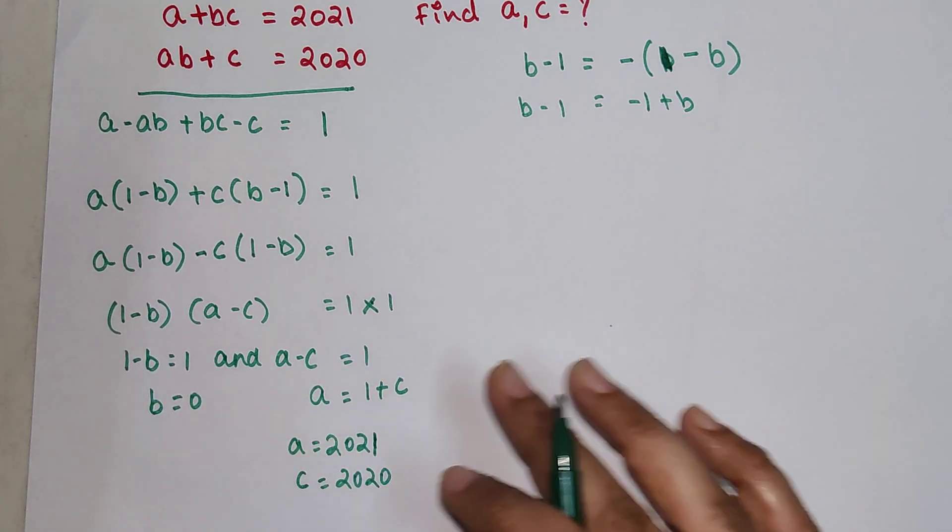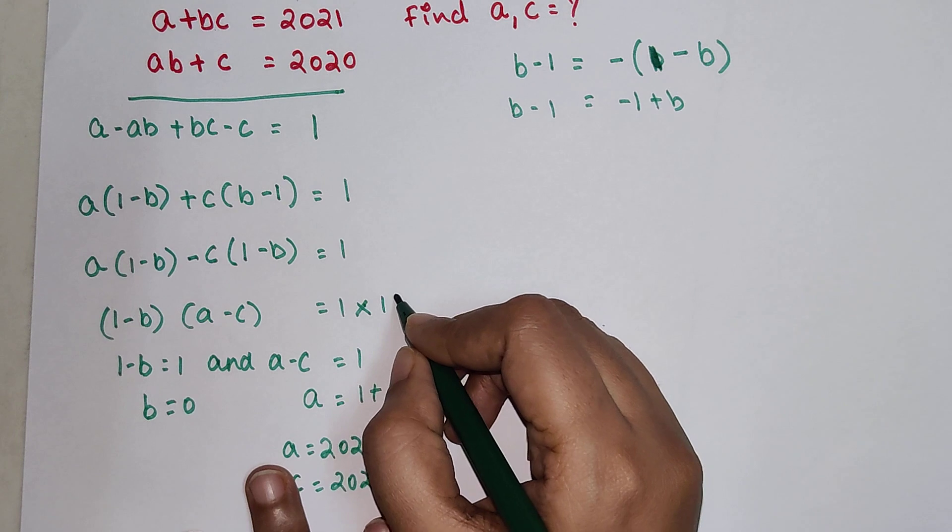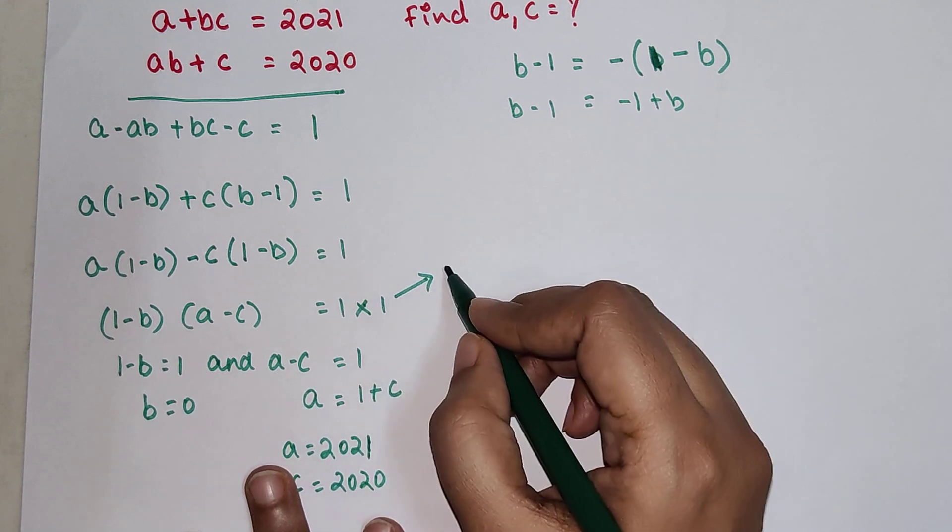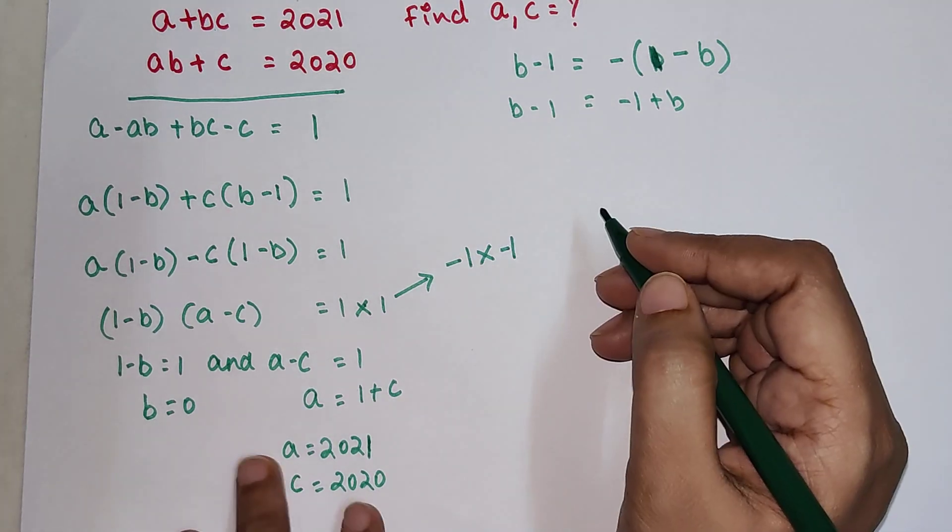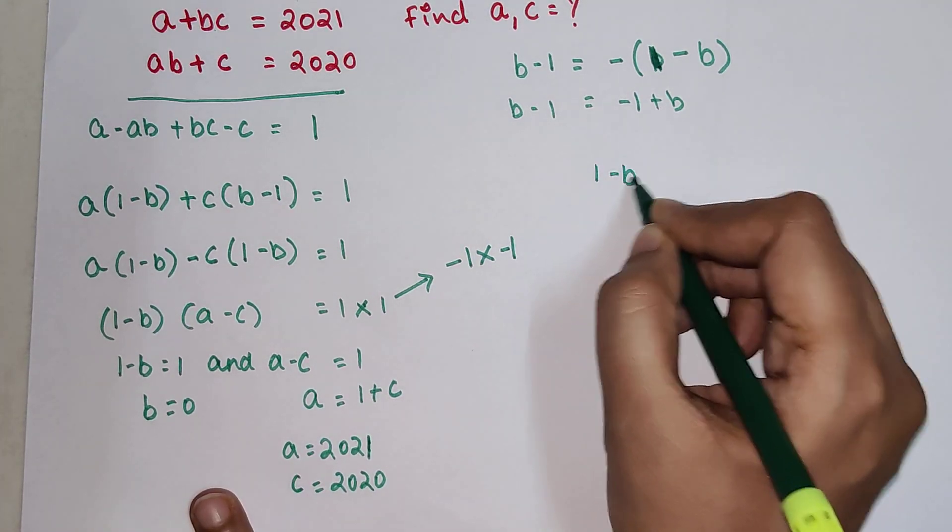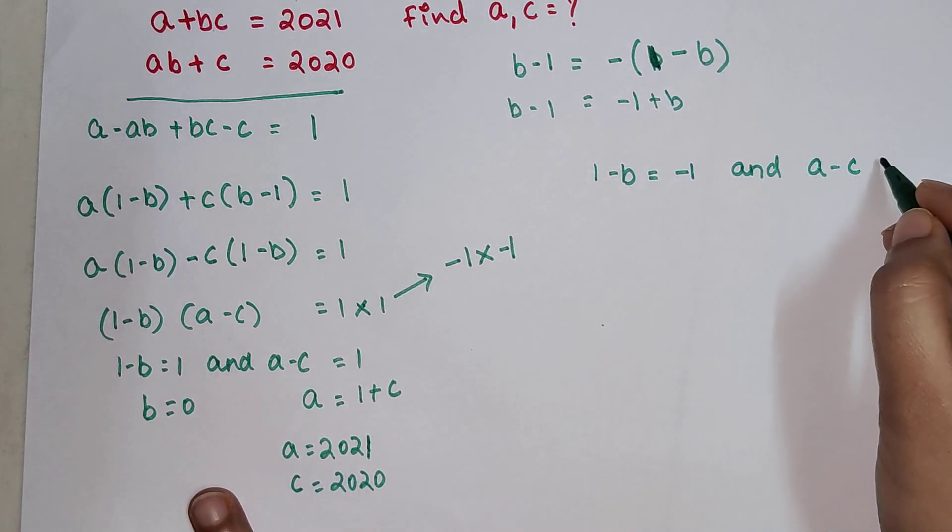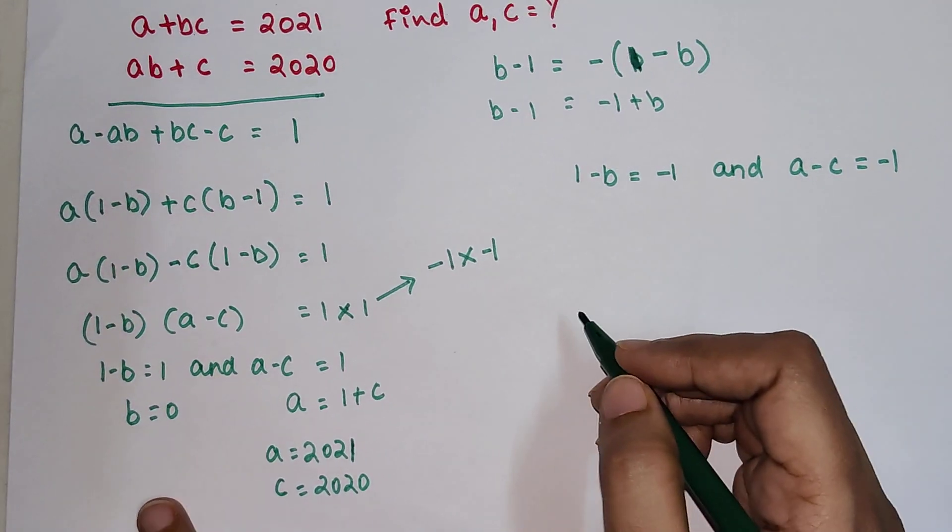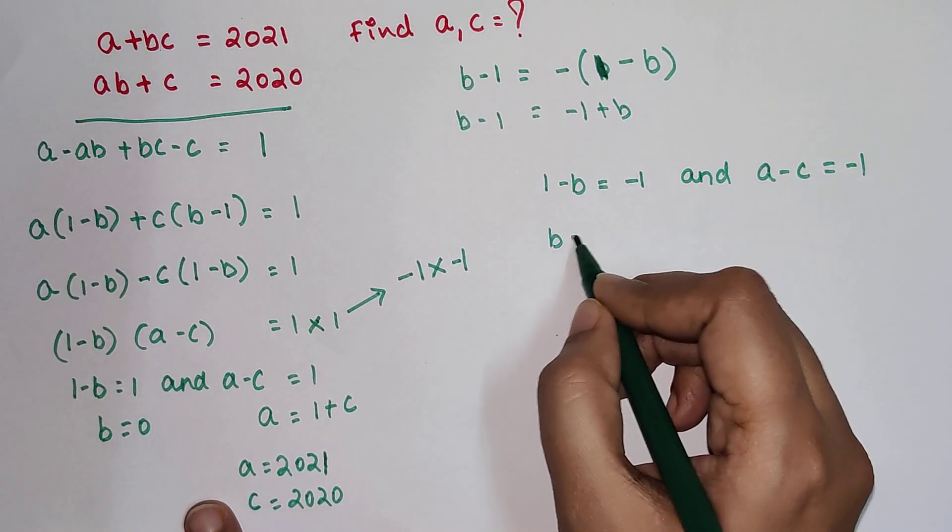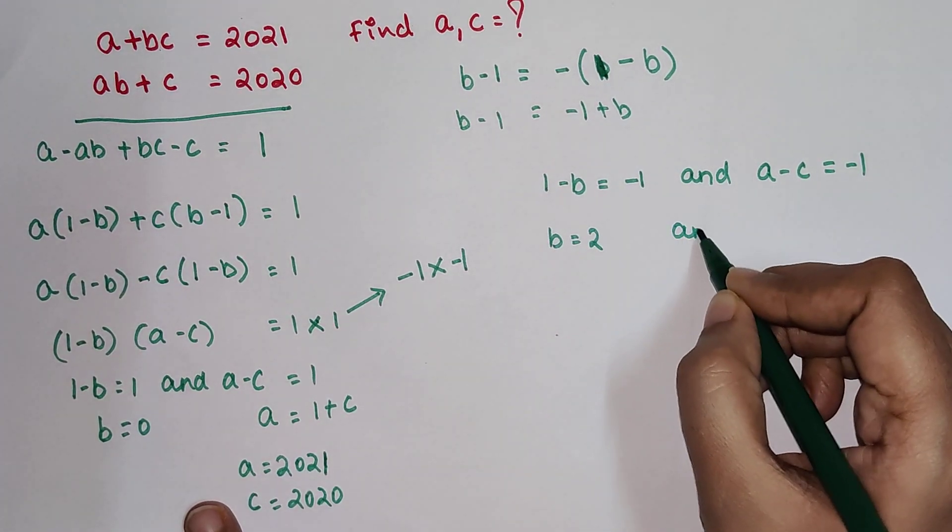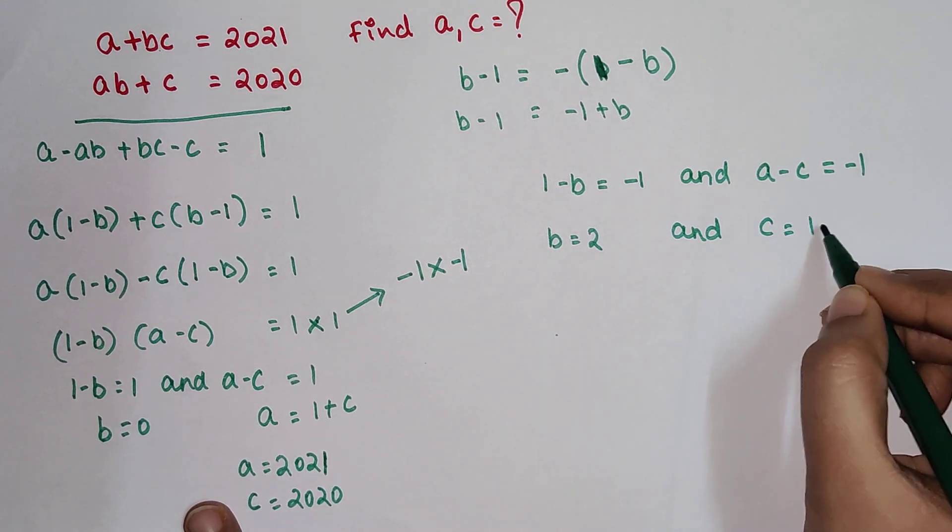Now students most of the students got this answer right? But there is one more scenario where you can get 1. That is nothing but minus 1 into minus 1 and in that scenario I can say that 1 minus B equals minus 1 and A minus C equals minus 1 correct? So here what we can do is B equals 2 and C equals 1 plus A.